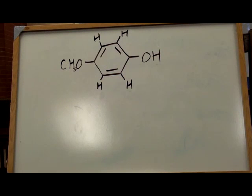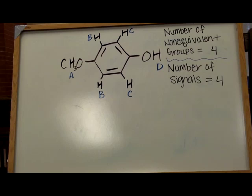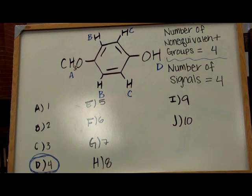So, now that we have considered equivalencies in hydrogen groups, we can label our non-equivalent hydrogen groups as follows: Group A, B, C, and D. As we can see, there are four non-equivalent hydrogen groups present within this compound. Therefore, four signals will be seen in its HNMR spectrum.